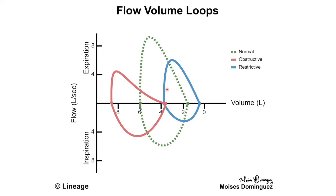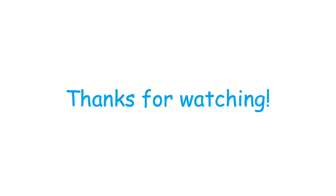In obstructive disease, there is a clear difference in shape. Expiratory flow is much reduced, and after the initial peak, air is expired very slowly, demonstrating the difficulty expiring air — air trapping and obstruction are evident. Inspiration is also reduced, but not as much as in restrictive disease, because the primary problem in obstructive lung disease is expiring air. Thank you very much for watching — I hope this was helpful. If you enjoyed, don't forget to leave a like and subscribe for more!